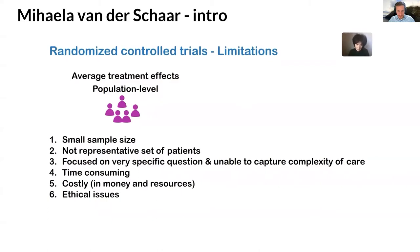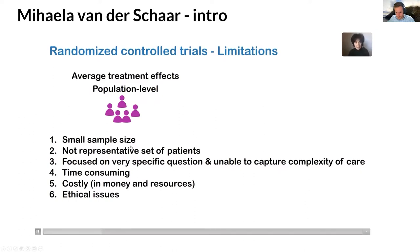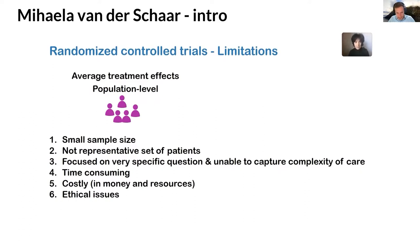RCTs enroll small sample sizes that are often not representative: patients with comorbidities or elderly patients are often not enrolled. Clinical trials are often focused on very specific questions and may not look at a variety of outcomes over time. They are also unable to capture the full complexity of care. Randomized controlled trials are also time-consuming, costly, and in certain scenarios may be unethical.